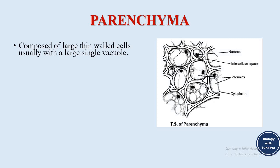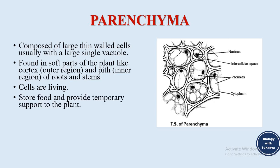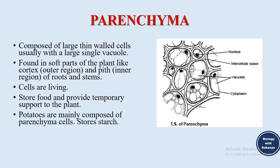Parenchyma is composed of large thin-walled cells, usually with a large single vacuole — we can see these large vacuoles in the diagram. They are found in soft parts of the plant like the cortex and the inner region of roots and stems. These are living cells that store food and provide temporary support. Potatoes are mainly composed of parenchyma cells and store large amounts of starch.